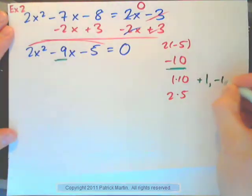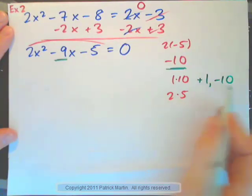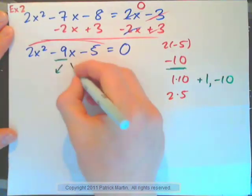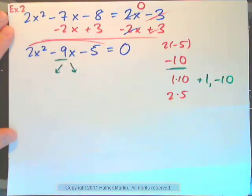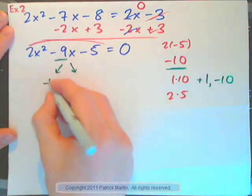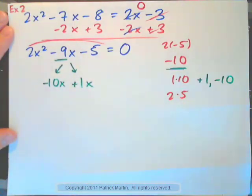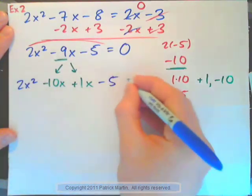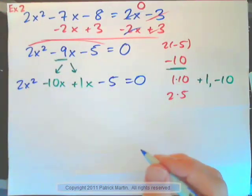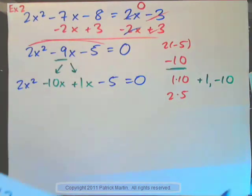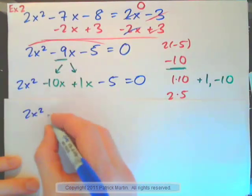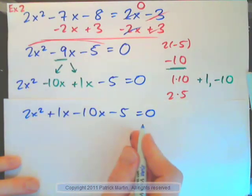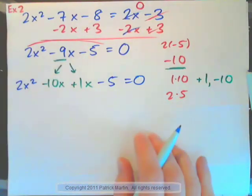Two numbers that multiply to negative 10 and add to negative 9 would be positive 1 maybe and negative 10. Would that work? If you add them, you get negative 9. If you multiply them, you get negative 10. So we could write this as negative 10x plus 1x, for example. And have 2x squared minus 10x plus 1x minus 5 equals zero. And of course you could also have written it 2x squared plus 1x minus 10x minus 5 equals zero. Either way would be correct.